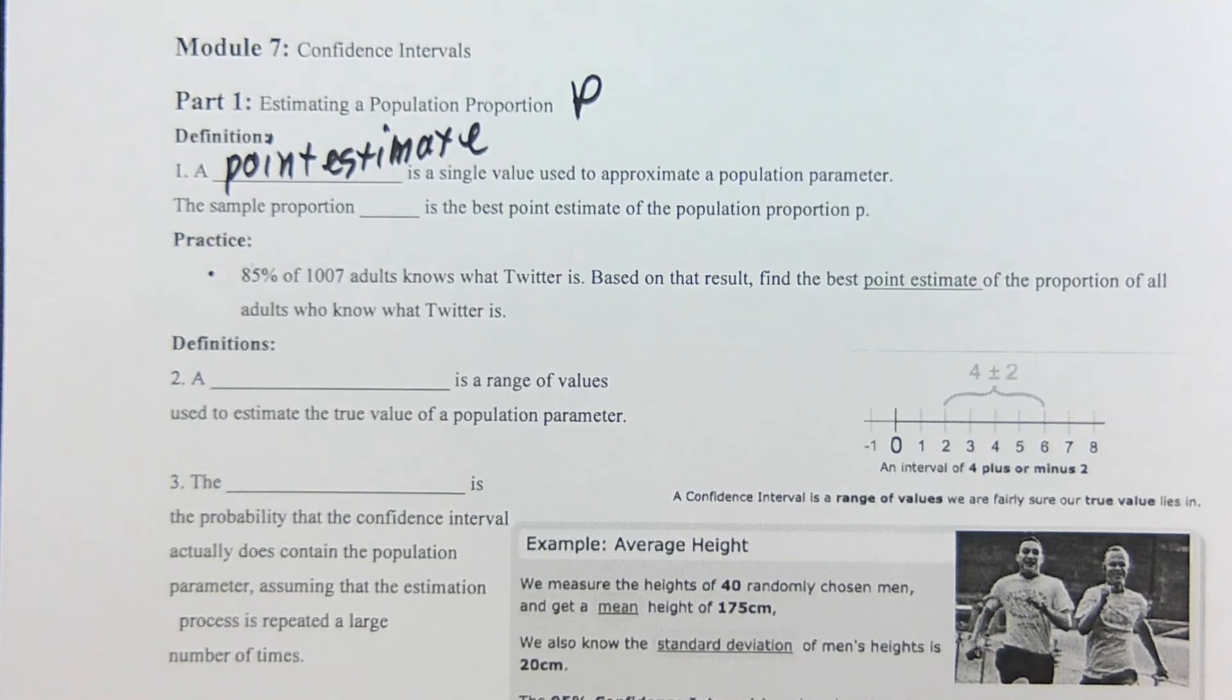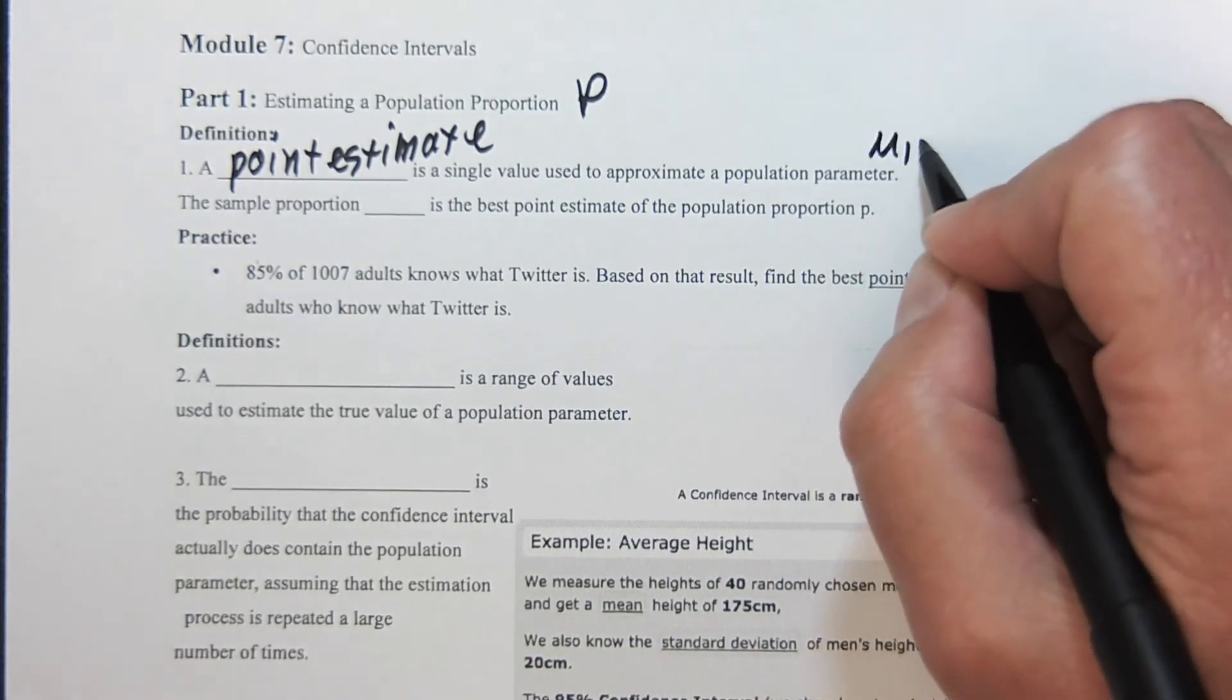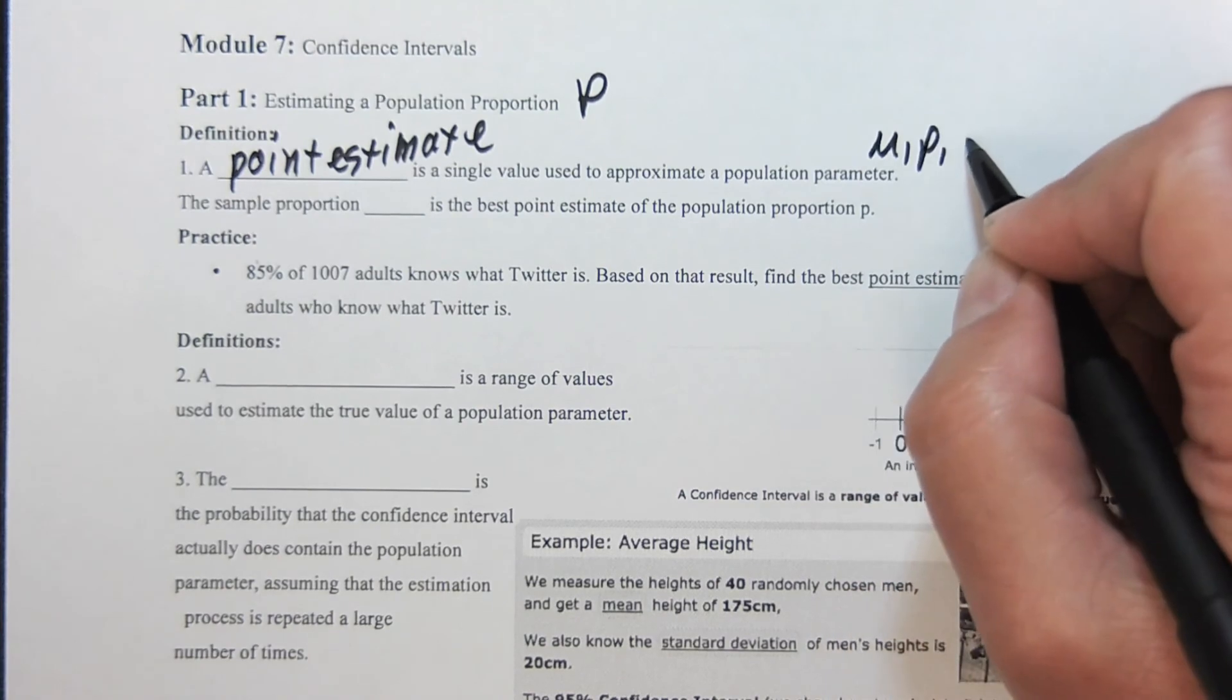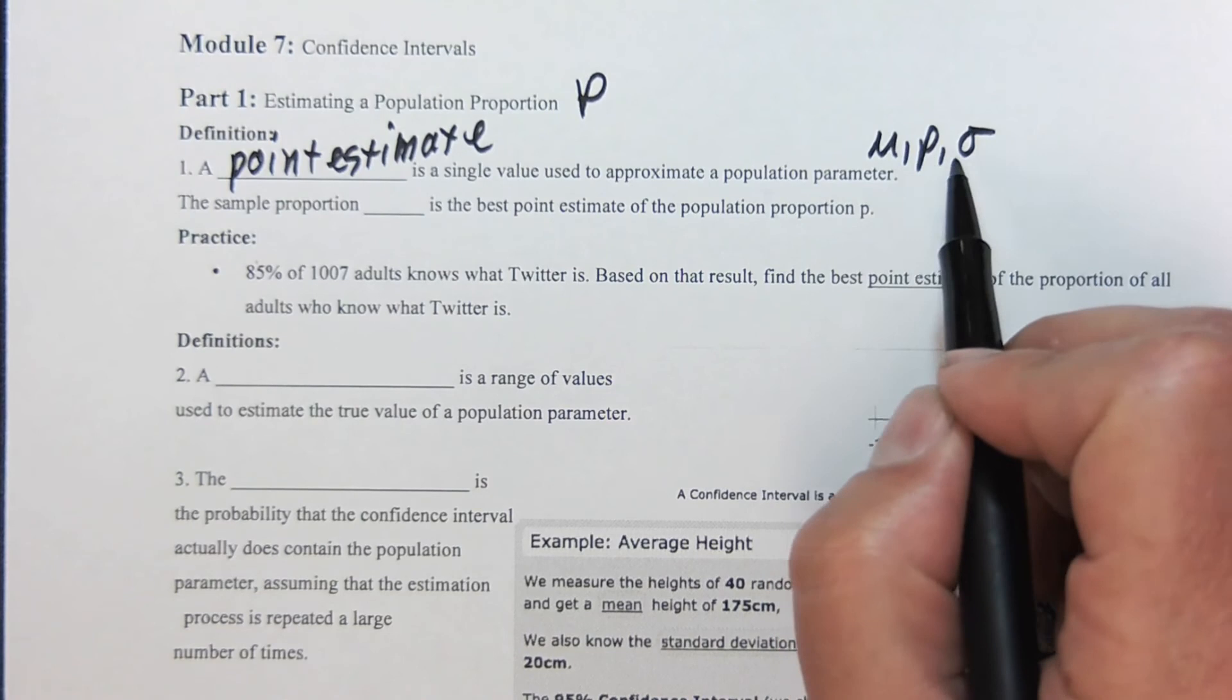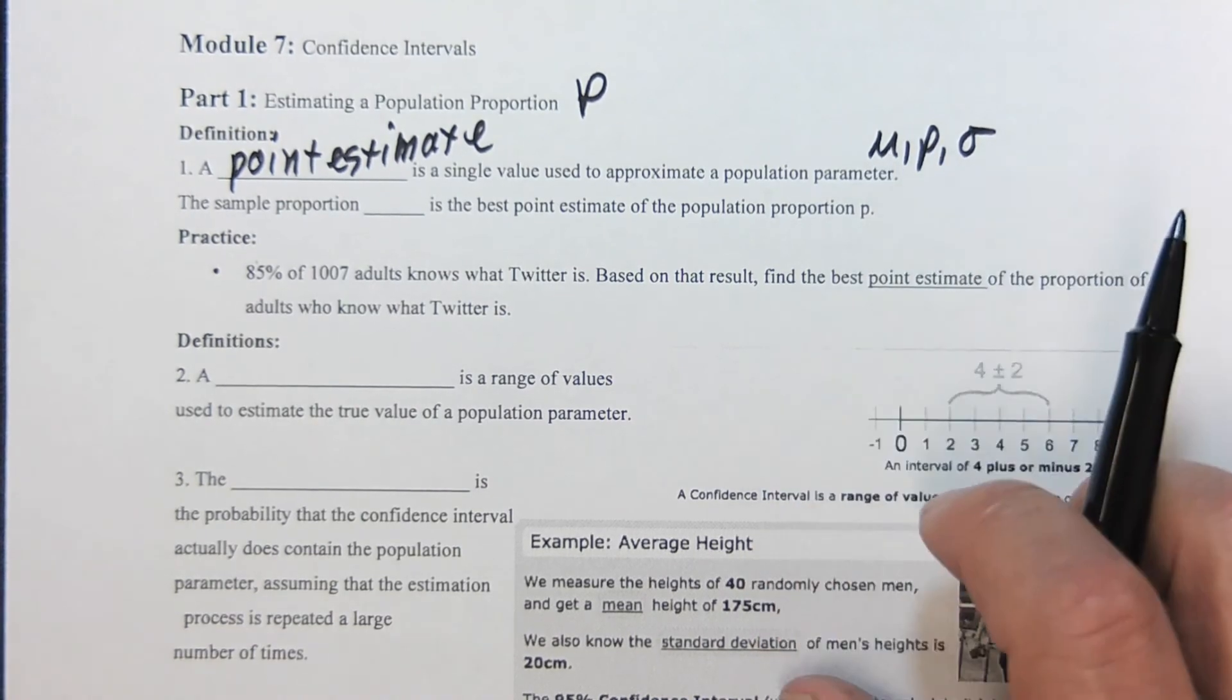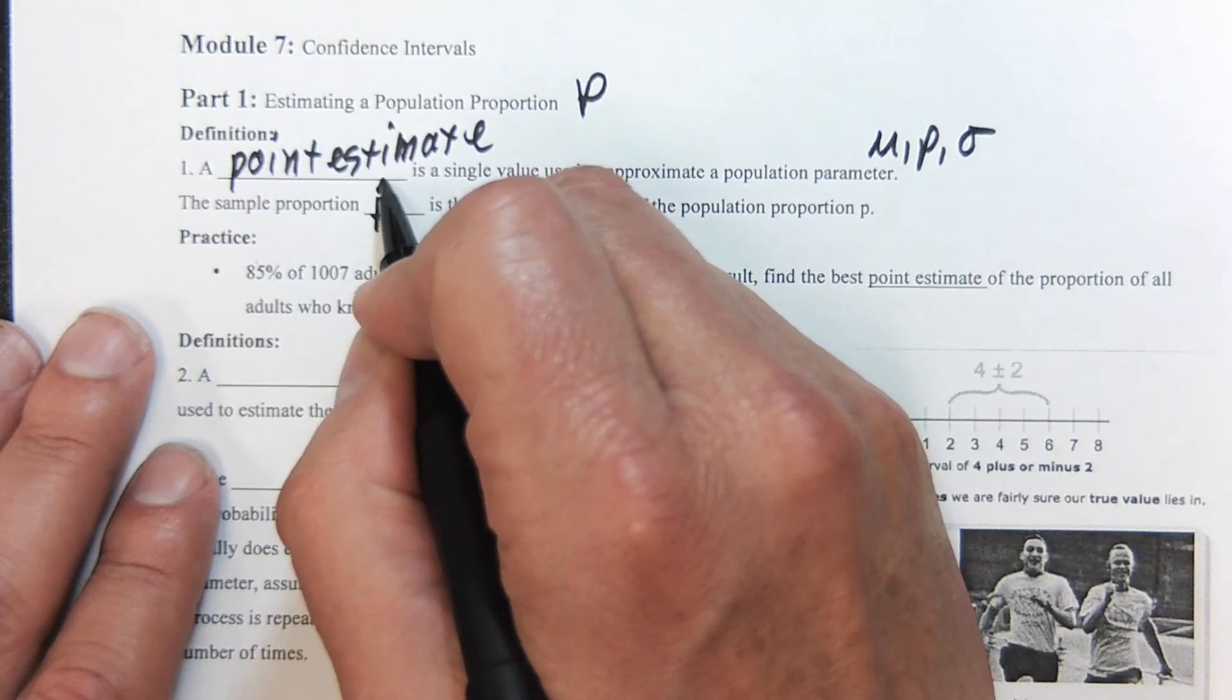A point estimate is a single value used to approximate a population parameter. Population parameter, for our purposes, is going to be the mean, proportion, and the standard deviation. This is part one, part two, and part three.